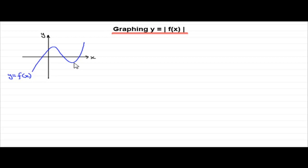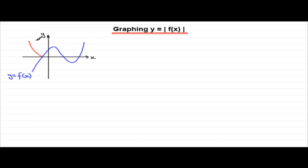If you make those negative values below the x-axis positive, what you get is a reflection of that part of the curve in the x-axis, coming up like this. The same applies to other sections below the x-axis — they are also reflected. So if we draw the graph of y equals the mod of f(x) for this graph, it's going to look something like this.